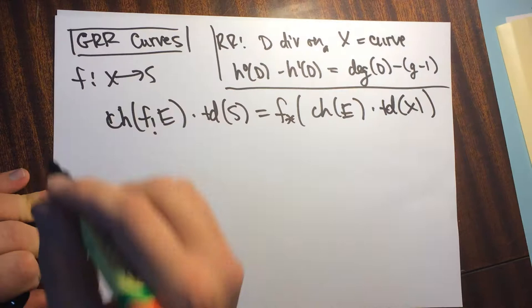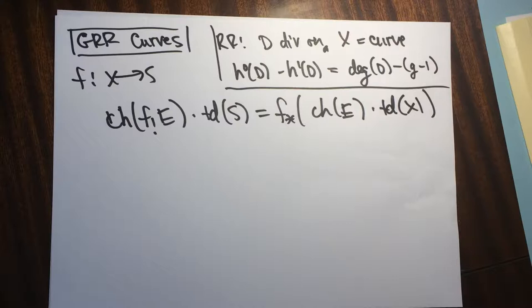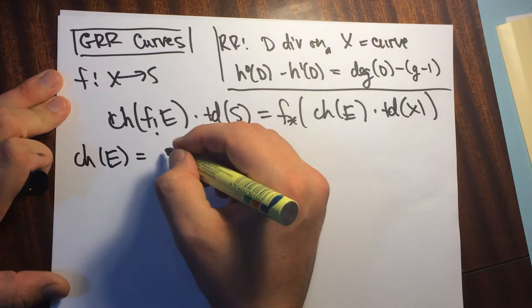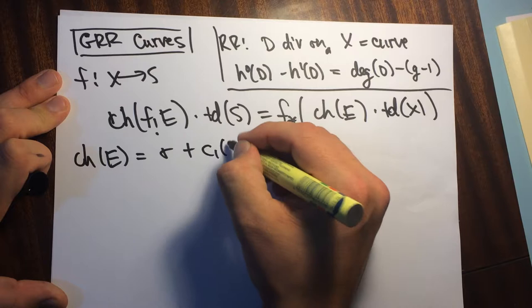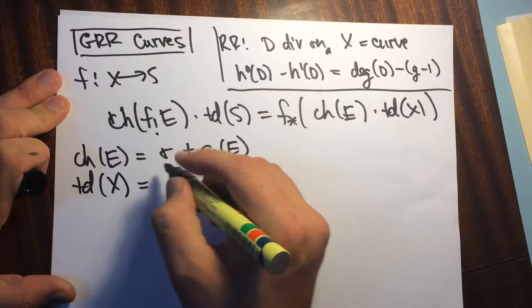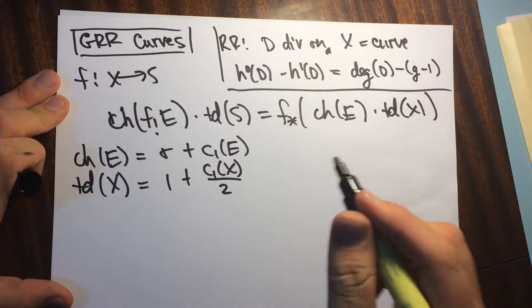In this case for curves, the higher Chern classes will vanish, and we just have that the Chern character of E is going to be equal to the rank of the vector bundle E plus the first Chern class of E. And then the Todd class of X is just going to be 1 plus the first Chern class of X divided by 2.